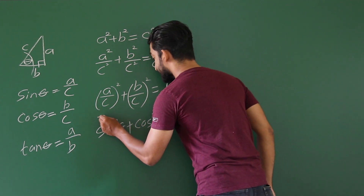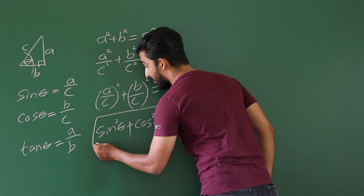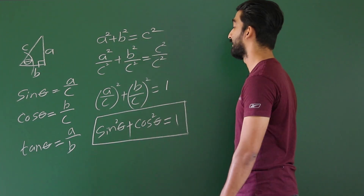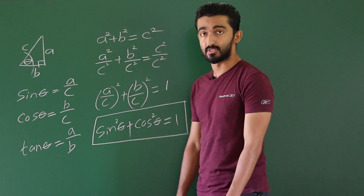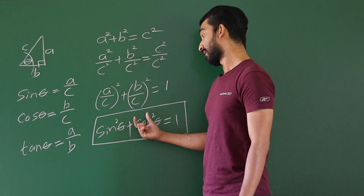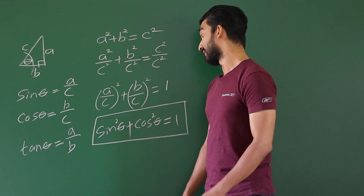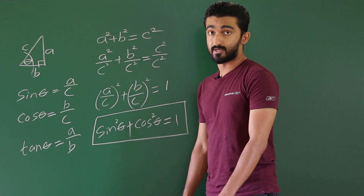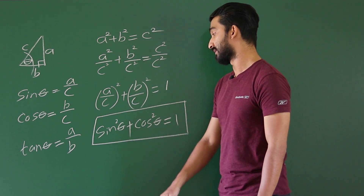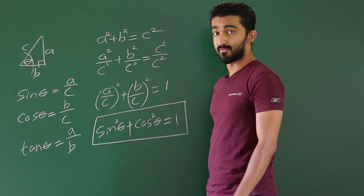This is considered the most popular and primary trigonometric identity in the world: sin²θ + cos²θ = 1. From this, we can derive two sub-identities: sin²θ = 1 − cos²θ, and cos²θ = 1 − sin²θ.